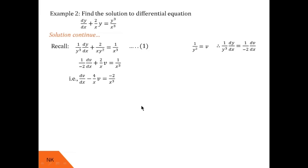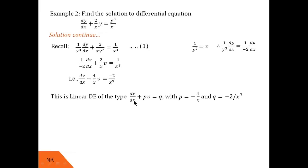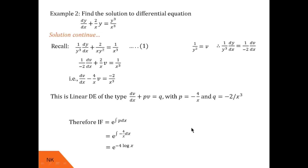This is a linear differential equation dv/dx + Pv = Q with P = −4/x and Q = −2/x³. The integrating factor is e^(∫−4/x dx) = e^(−4 ln x) = e^(ln x^(−4)) = 1/x⁴.